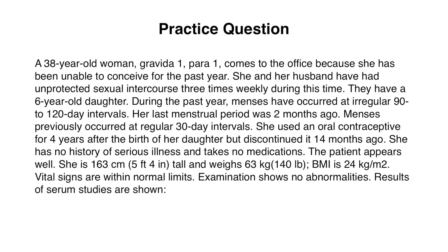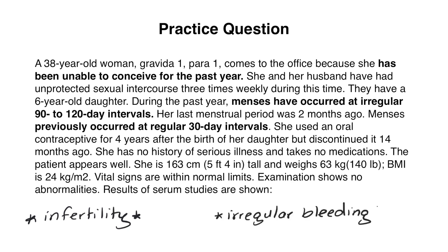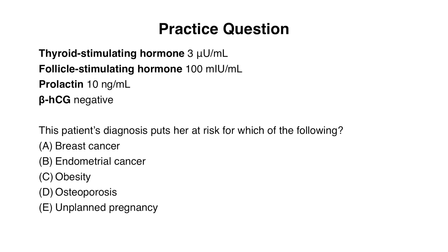Before we go over the serum studies, let's go over key things in the history. The concern here is infertility — the patient has not been able to conceive for the past year despite unprotected sexual intercourse with her partner. She has now developed irregular menstrual cycles where normally she used to have regular 30-day intervals. So this patient is experiencing abnormal uterine bleeding, in particular irregular bleeding, and we need to figure out the cause.